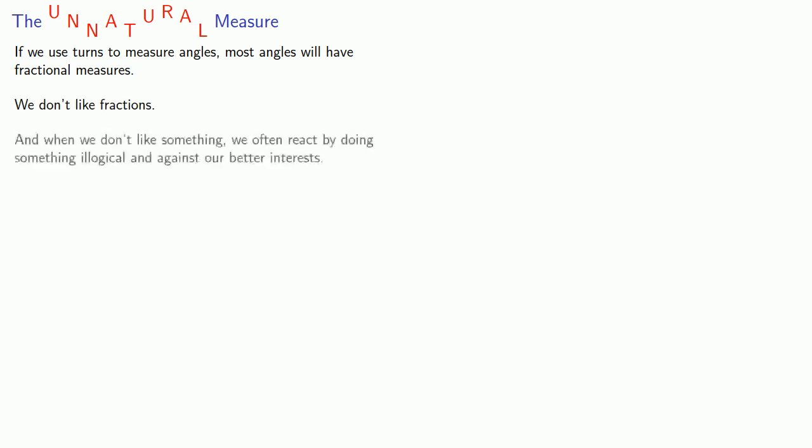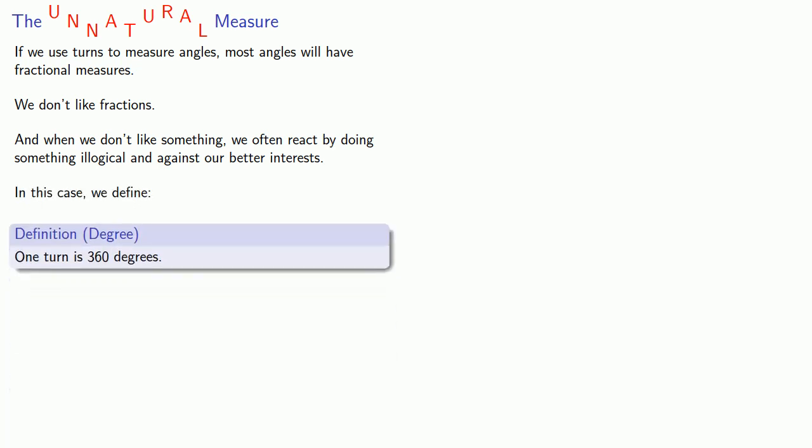So let's talk about an unnatural measure of an angle. The problem is that if we use turns to measure angles, most angles will have fractional measures. And I know, everybody loves fractions and wishes every problem would have nothing but fractions in it. Well, actually, most of us don't like fractions. And when we don't like something, we often react by doing something illogical and against our better interests. So we might vote for a populist demagogue with delusions of grandeur. Or in this case, we might define something called a degree and say that one turn is 360 degrees.